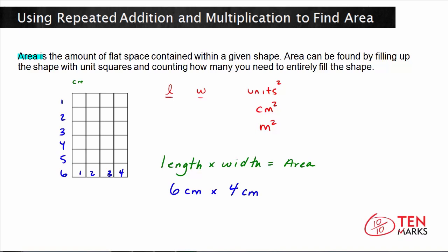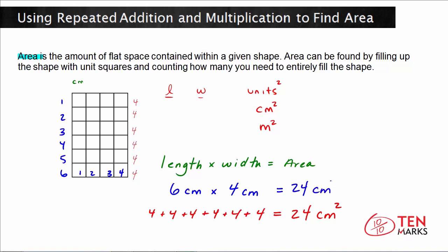Now to multiply, you can use your times tables or you can use repeated addition. Since each row has four squares in it, you can use repeated addition by adding four to itself six times: four plus four plus four plus four plus four plus four. When you add all this together, you get a total of 24. And because the units are centimeters, you would have 24 centimeters squared. If you know your times tables, six times four is also 24, and the units would be centimeters squared.